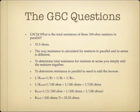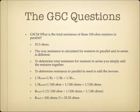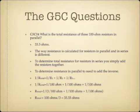What is the total resistance of three 100-ohm resistors in parallel? The answer is 33.3 ohms. The formula for total resistance in parallel is: 1 over R-total equals 1 over R1 plus 1 over R2 plus 1 over R3. So we have 1 over R-total equals 1/100 plus 1/100 plus 1/100. Doing the algebra: R-total equals 1 over the sum of those fractions, which equals 100 divided by 3, which is 33.3 ohms.